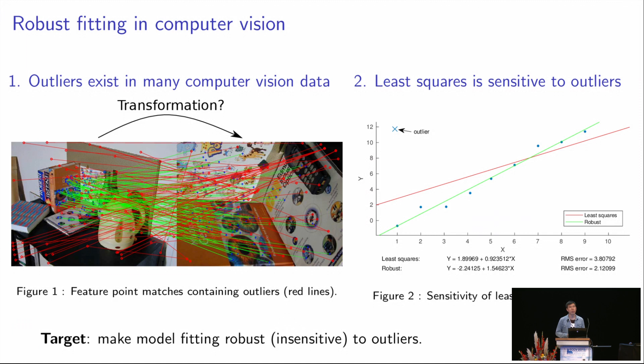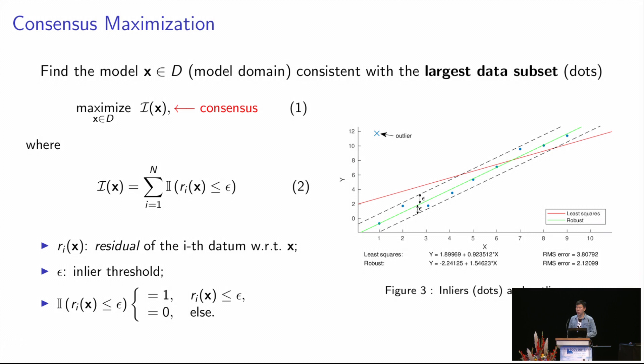In computer vision, one of the most popular ways for robust fitting is consensus maximization. This problem originates from RANSAC, which I'm sure most of you already know. In consensus maximization problem, we want to find the model that is consistent with the largest data subset. As we can see in the right figure, a datum is said to be consistent with the model if its residual to the model is less than a given threshold epsilon. And depending on the problem instance, the residual RI can have different form.